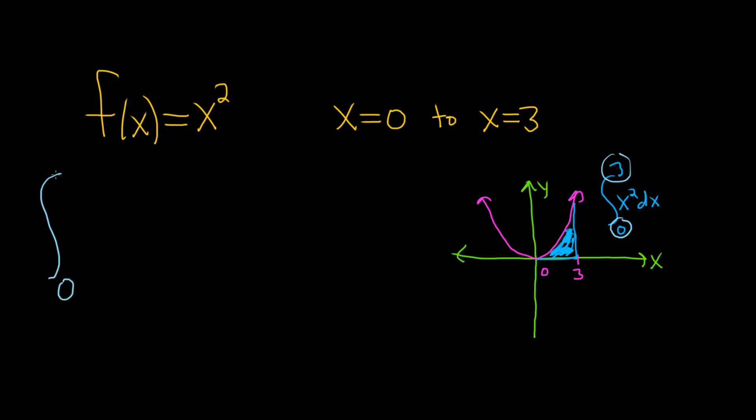So we write down the 0 and we write down the 3, and then we write down our function x squared, and then the symbol dx. That basically just means that x is the variable we're integrating with respect to.